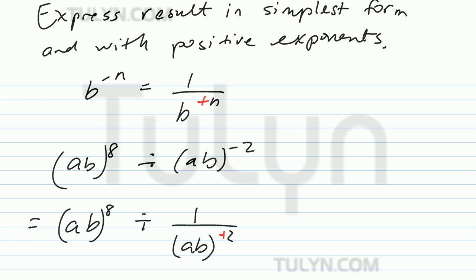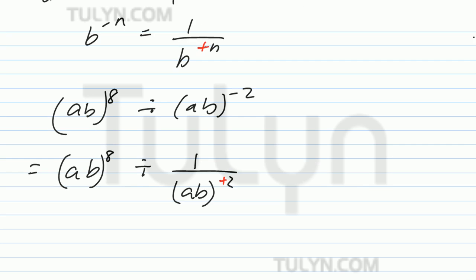The power becomes positive, so that will be ab to the 8th power, and then the division turns into multiplication. And then you have to find the reciprocal of your second fraction. 1 over ab squared, so it will be ab squared over 1.